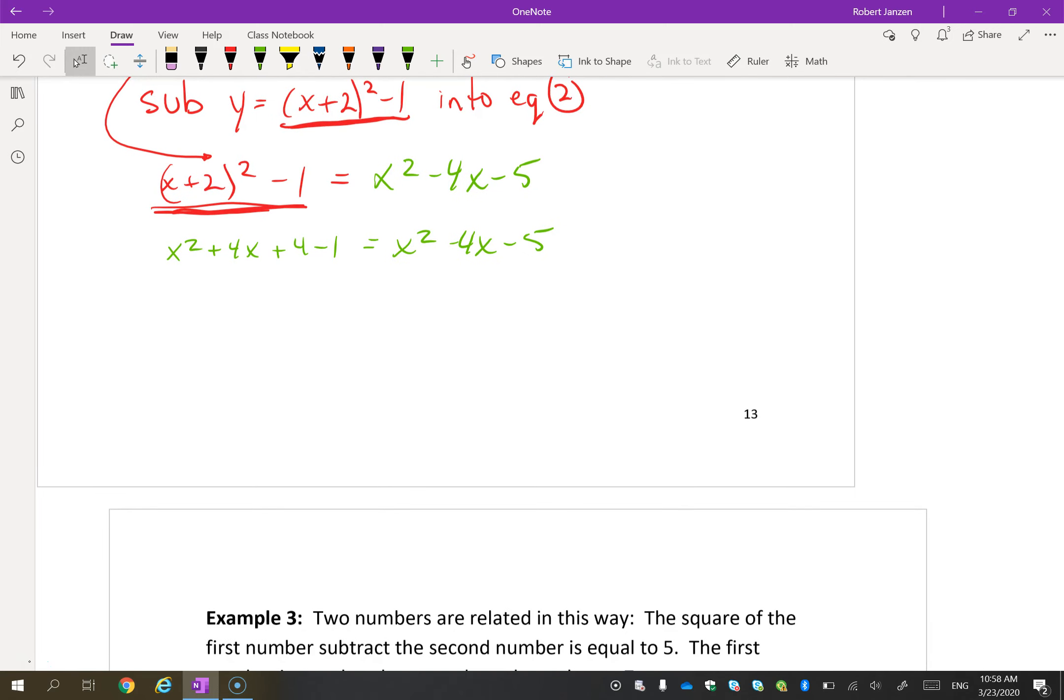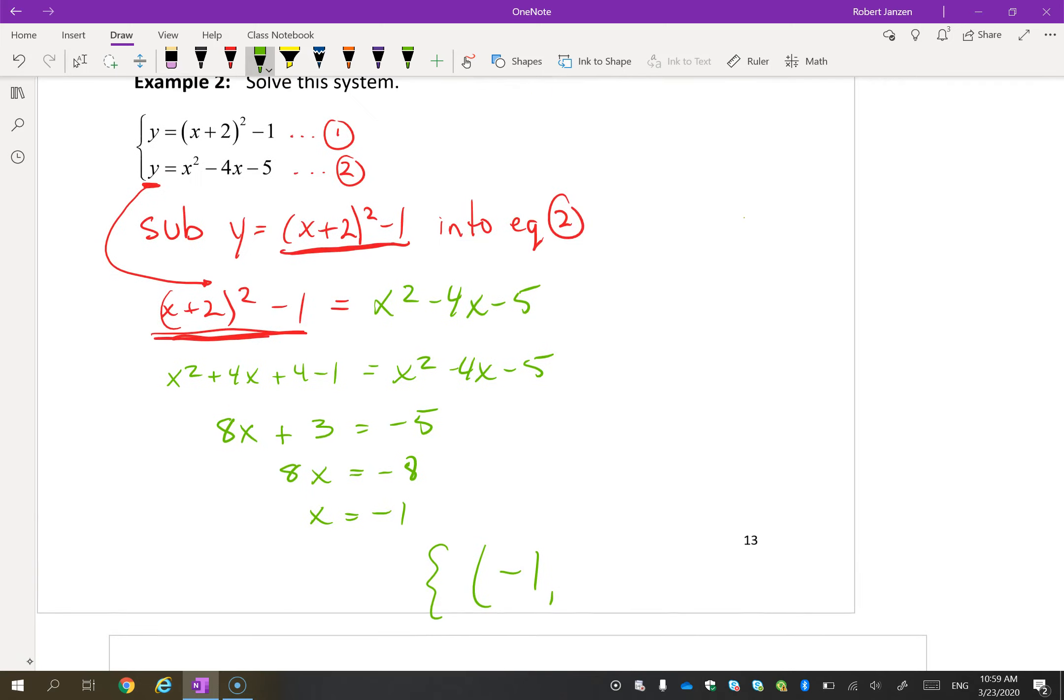If I subtract x², they disappear, so I end up with 8x + 3 = -5. So 8x is -8, x is -1. So this time I'm only going to have one solution. x is -1. Let's find y. So sub x is -1 into equation 1. So y is (-1 + 2)² - 1. y is 1 - 1. y is 0. There's my solution.